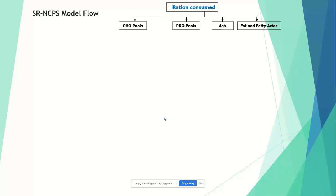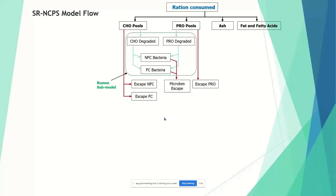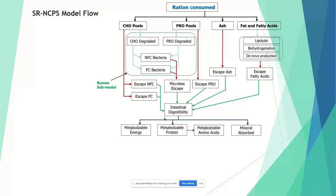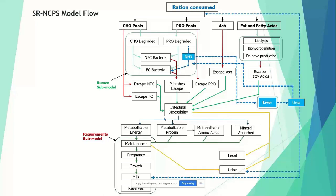What is degraded or fermented in the rumen depends on the competition between rate of degradation and rate of passage. Carbohydrate and protein fractions are fermented in the rumen submodel, resulting in NFC and FC bacteria with different requirements. There is an escape for NFC, for FC, microbial production, and escape protein. A lipid submodel also exists, and all components have intestinal digestibility, driving metabolizable energy and metabolizable protein partitioned to maintenance, pregnancy, growth, milk, and reserves. Recycled nitrogen estimation is also included.